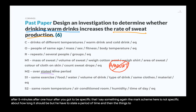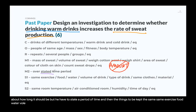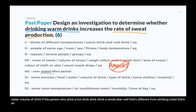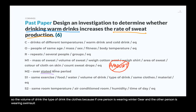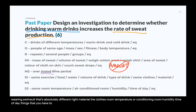For the things to be kept the same: same exercise, food, water, and volume of drink — if one person drank a whole liter and the other only 50 milliliters, that's a difference. Also keep the type of drink, clothing, and material of clothes the same — someone in winter gear versus a swimsuit will produce very different results. Room temperature, air conditioning, humidity, and time of day are all environmental factors that must be kept the same.